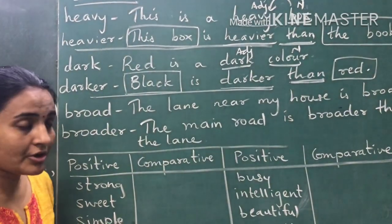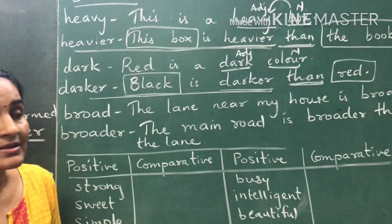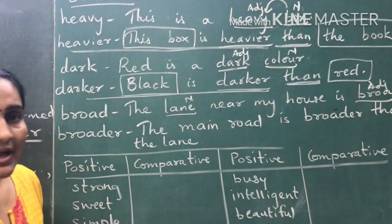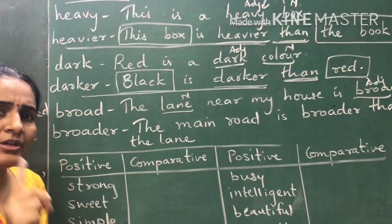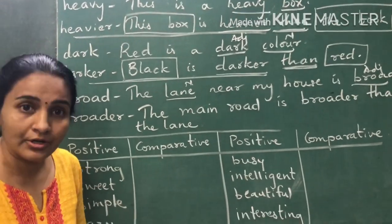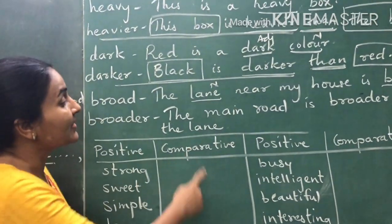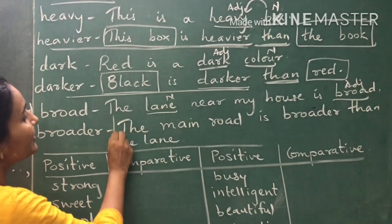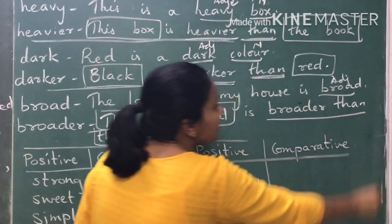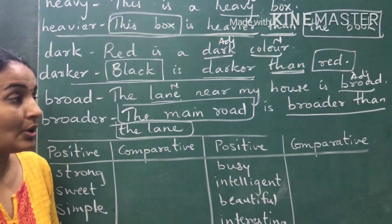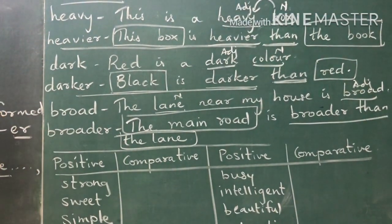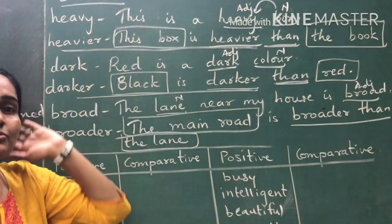For 'broad': 'The lane near my house is broad' — positive degree, talking only about one lane. 'The main road is broader than the lane' — comparing two things, using 'broader than.' For comparative degree, you always need to use the word 'than.' You can frame such simple sentences to make your concept clear.